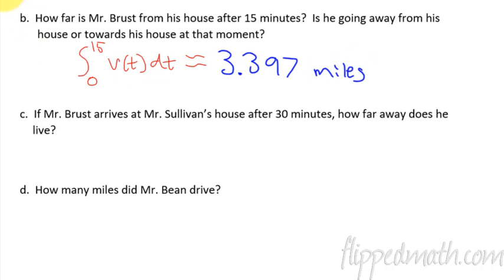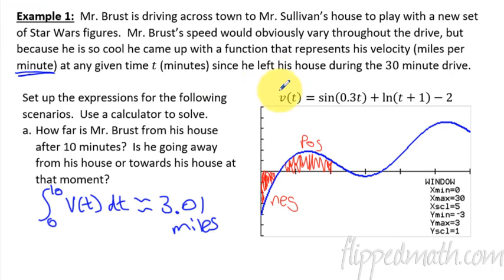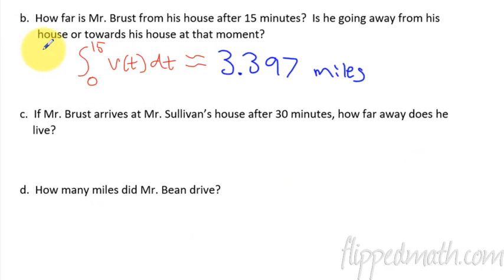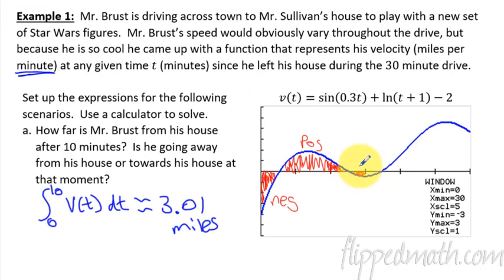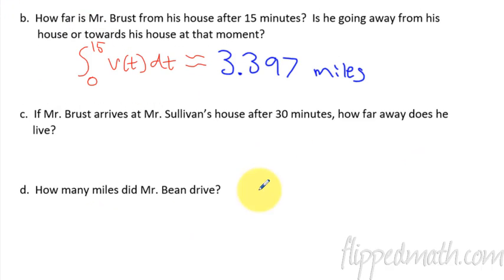So why is it barely more after five more minutes? Because, watch, now we're going all the way to 15. So we add this bit here, but then we subtract this bit, because this is negative. So that's why it used to be 3.01 miles, and five minutes later, we've hardly gone any further, because somehow, Mr. Brust turned around and went the wrong direction again. Okay, so that's what this negative is.